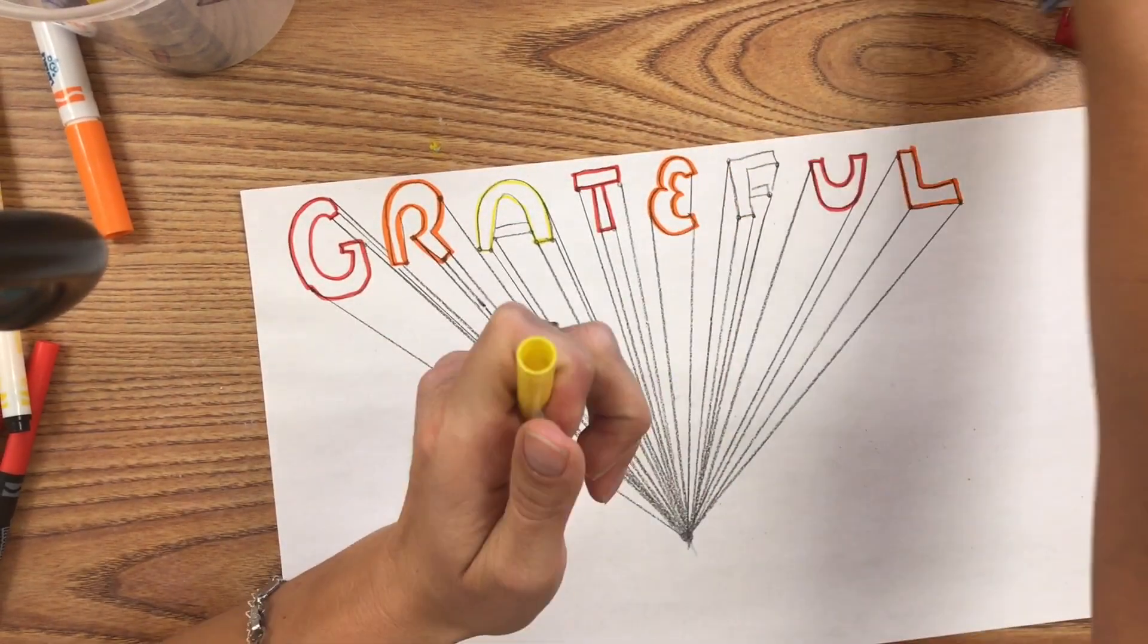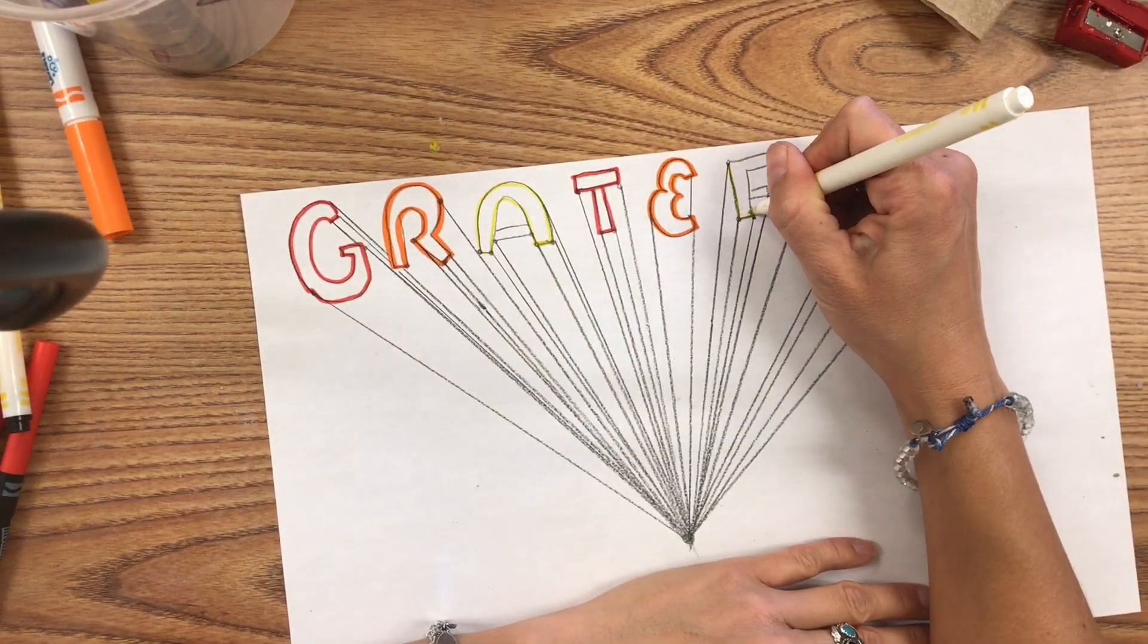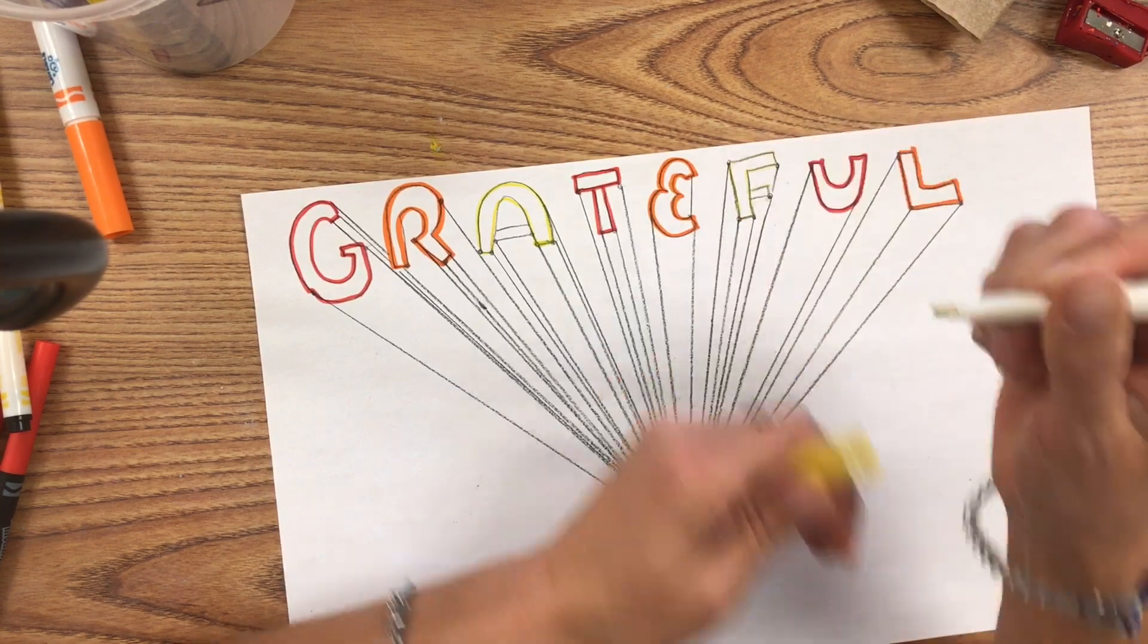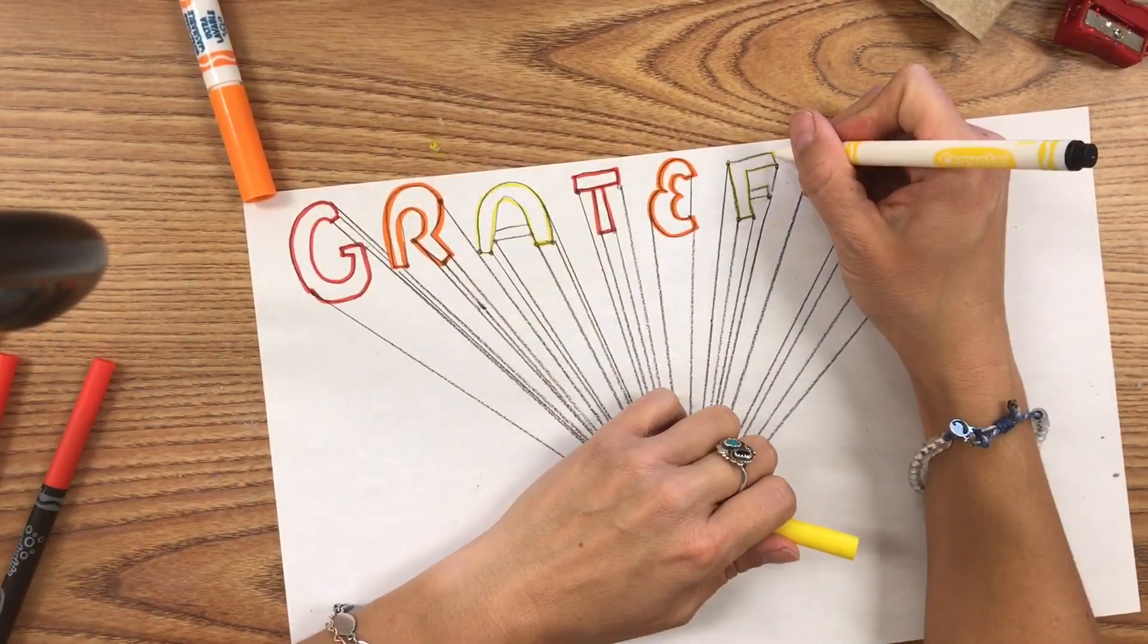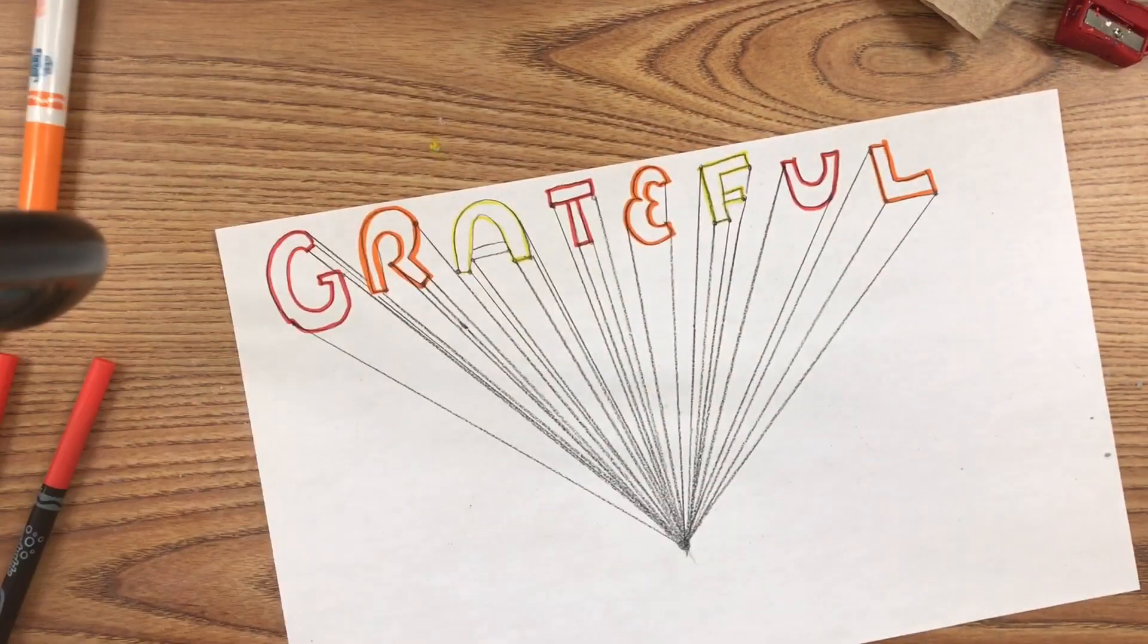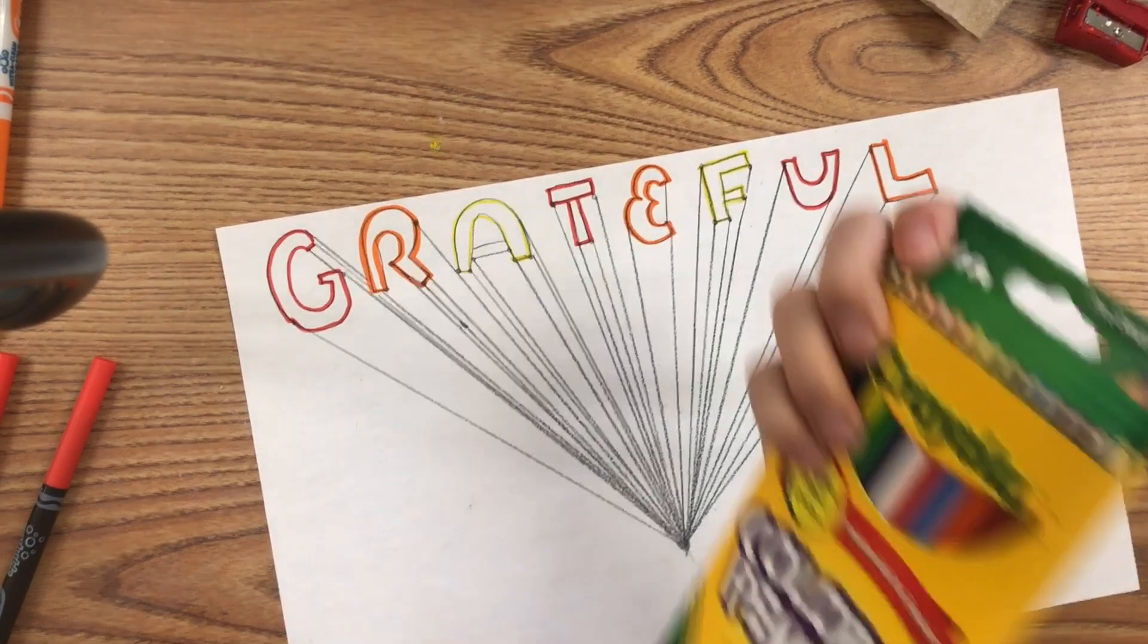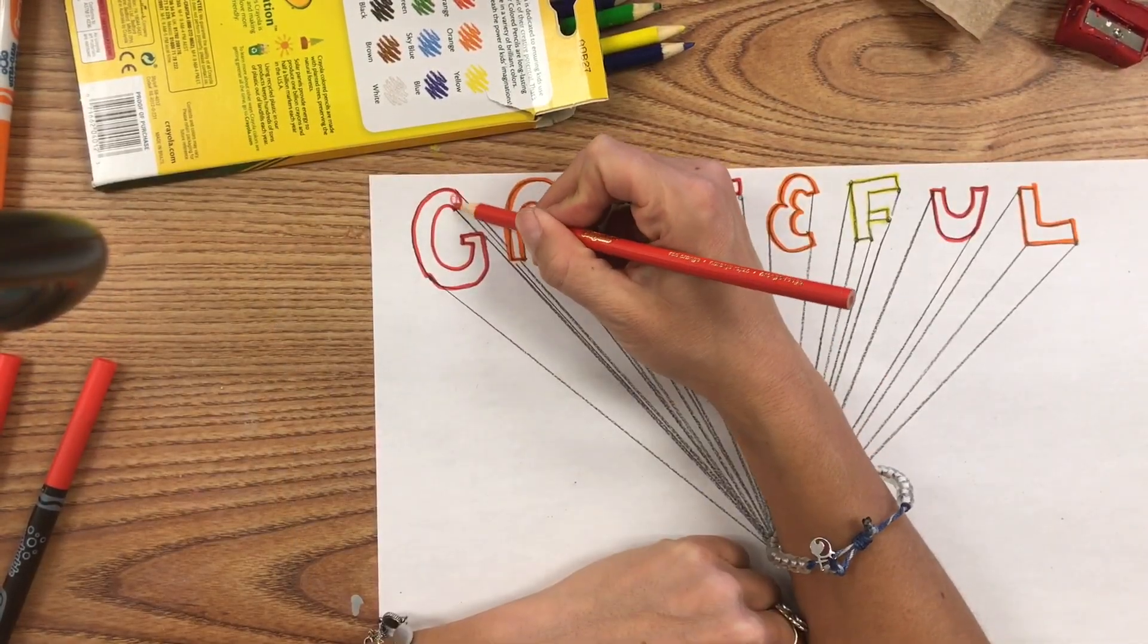If the tip of the marker is dirty, you can just grab a paper towel and clean it like that. Go ahead and outline your letters with a marker. Make sure that the cap is snapped back on so it doesn't dry out. Then you can use colored pencils for the next part.